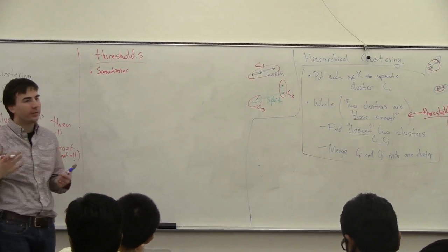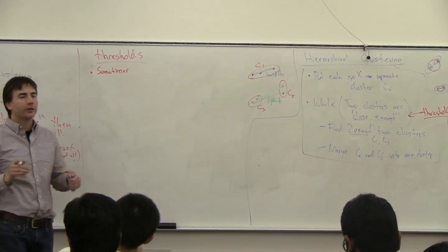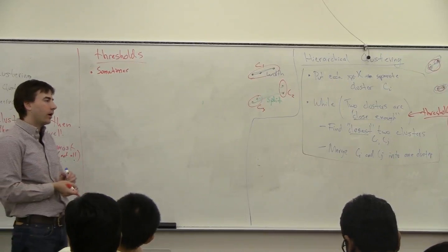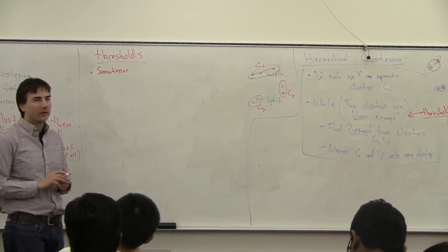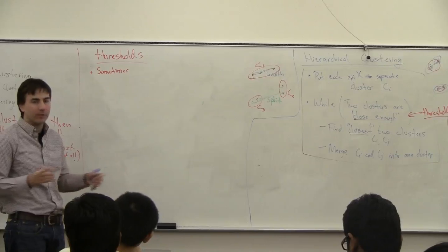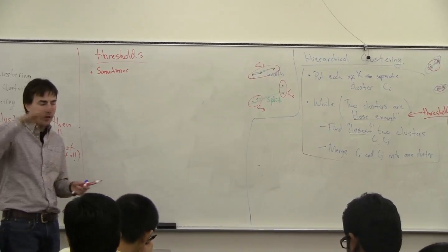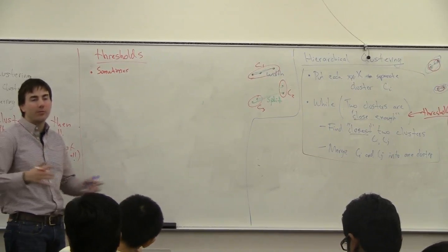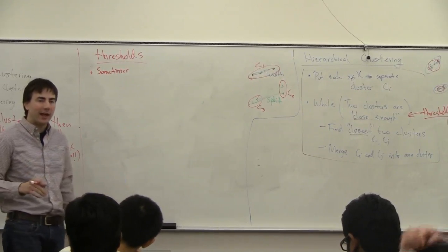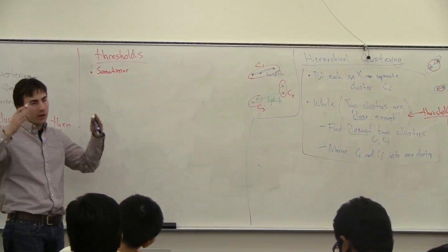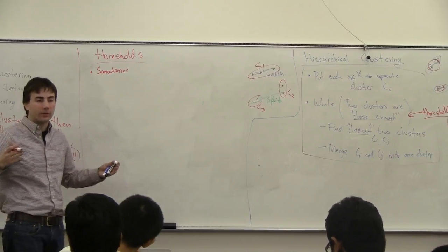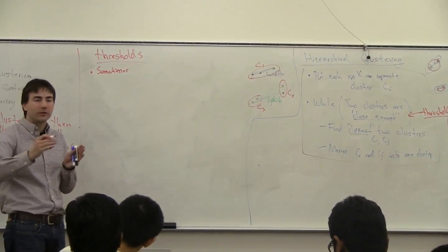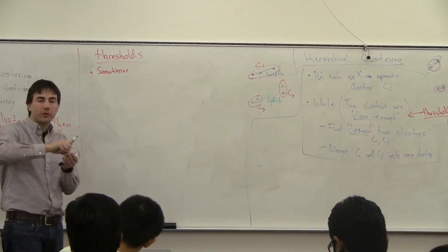There are problems where you're trying to cluster populations on a map. If you're the post office trying to put post offices in different locations, and you don't want your drivers to ever have to drive more than a certain distance in one day, you have a natural upper bound on the size of a cluster based on the distance from the centroid, which is where you put the post office.